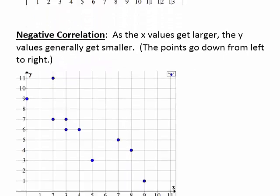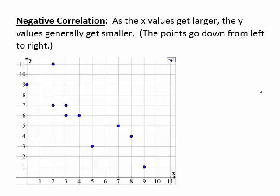If we take a look at negative correlation, it's very similar. As the x values get larger, the y values generally get smaller. The points are grouped together in general, going down or decreasing from left to right. Notice the points are scattered, but they're getting lower and lower as you go further to the right.